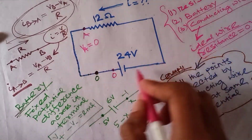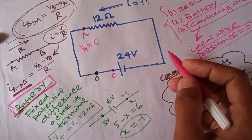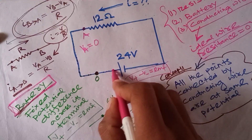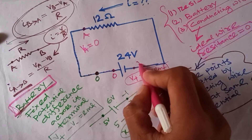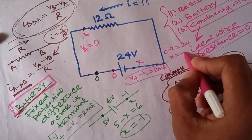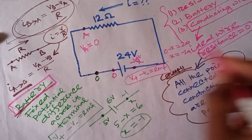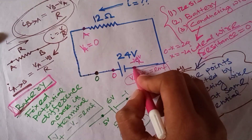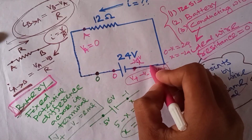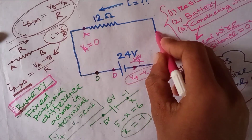Now we apply concept two, the battery concept: we must maintain the fixed potential difference. The positive side potential minus the negative side potential equals the EMF, which is 20V here. Writing: 0 minus X equals 20V, so X equals minus 20V. Applying concept one again, this point of potential is minus 20V, and this connected point is also minus 20V, while this other node remains 0V.